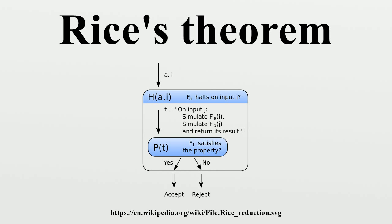The algorithm for deciding this is conceptually simple. It constructs a new program t taking an argument n, which first executes program A on input I, and then returns the square of n. If A runs forever, then t never gets to the squaring step, regardless of n. Then clearly, t is a function for computing squares if and only if A terminates on I. Since we've assumed that we can infallibly identify programs for computing squares, we can determine whether t — which depends on A and I — is such a program, and that for every A and I, thus we have obtained a program that decides whether program A halts on input I.